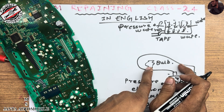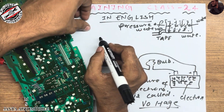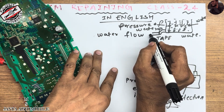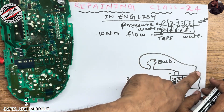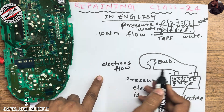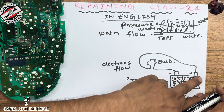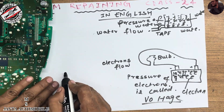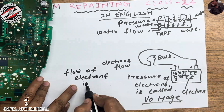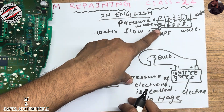So the water flows from the tap, and the electrons flow in the bulb. The flow of water corresponds to the flow of electrons. The flow of electrons is called ampere.